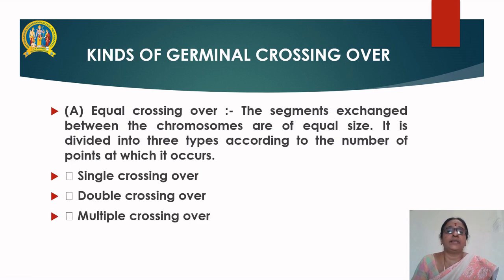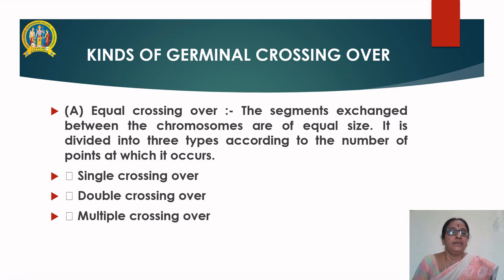Kinds of germinal crossing over. Equal crossing over: the segments exchanged between the chromosomes are of equal size. It is further divided into three types according to the number of points at which it occurs: single crossing over, double crossing over, and multiple crossing over.